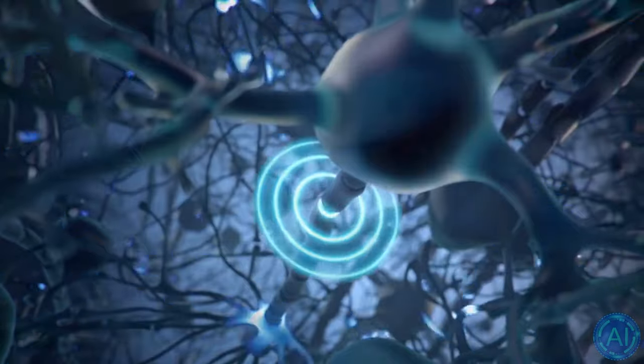Last year, Google and the Howard Hughes Medical Institute's Genelia Research Campus made news when they mapped a part of a fruit fly brain in a similar way.